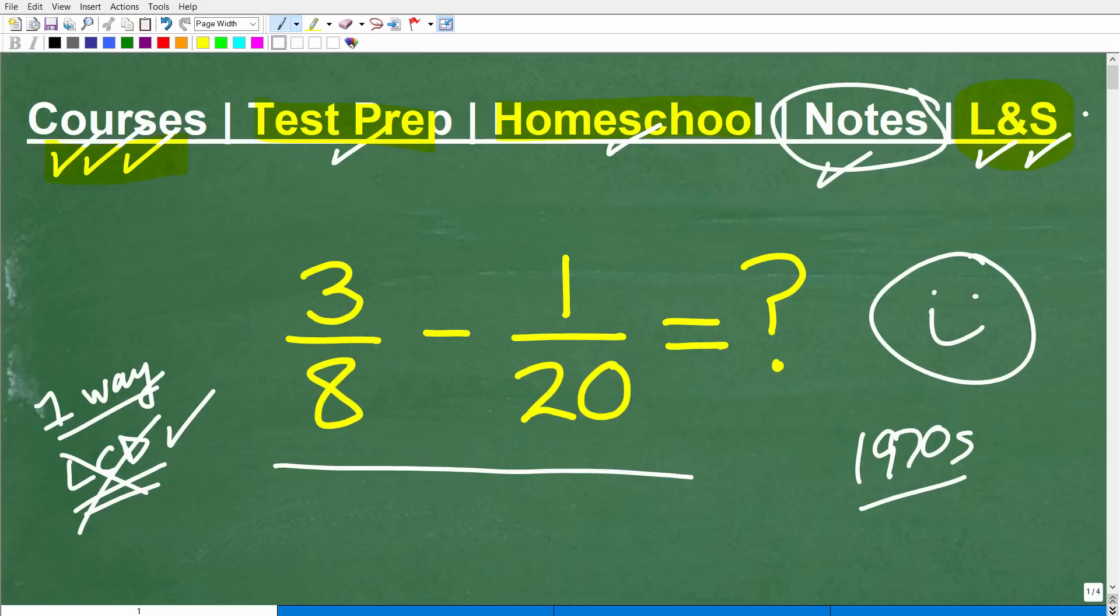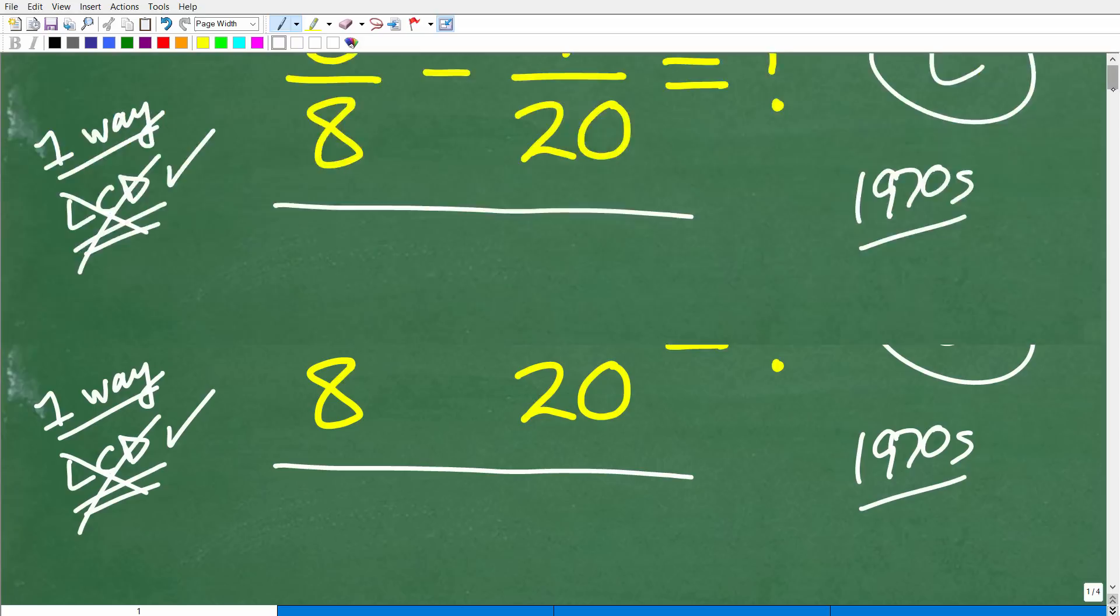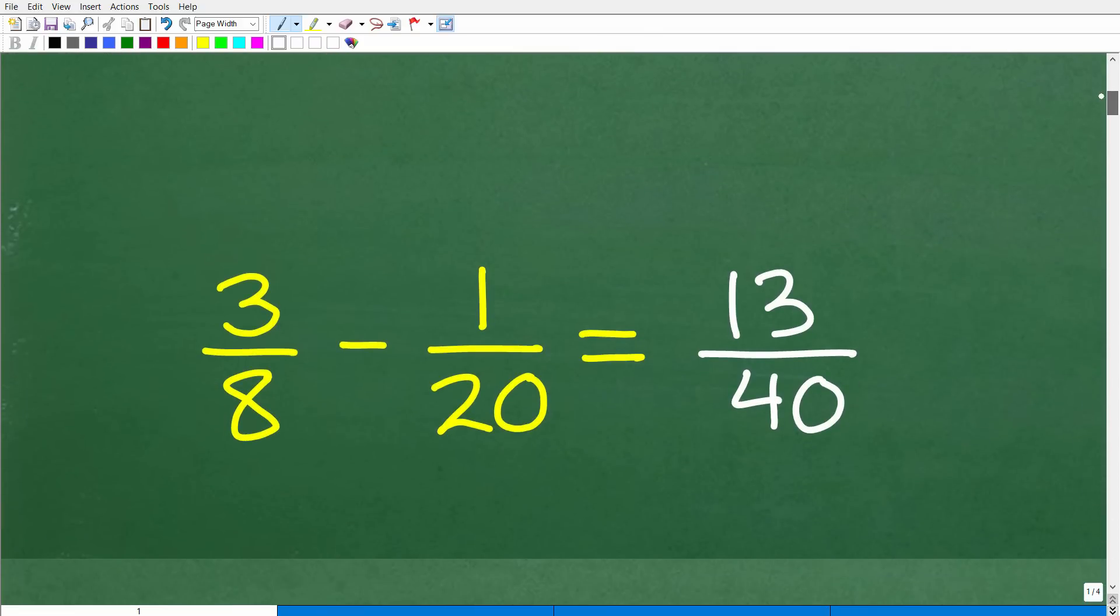Okay, so let's get into how to subtract fractions. And I'm going to go ahead and show you the answer right now. There you go. The answer to three-eighths minus one-twentieth is thirteen fortieths or thirteen over forty. There you go.